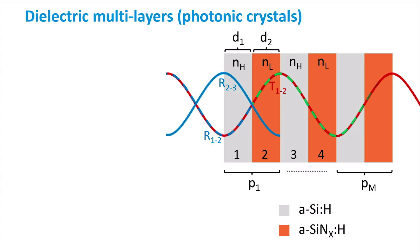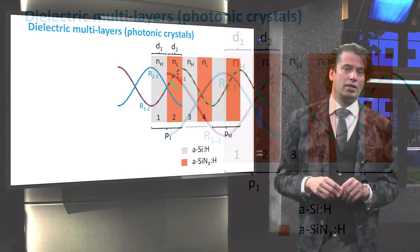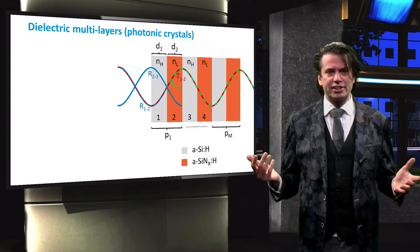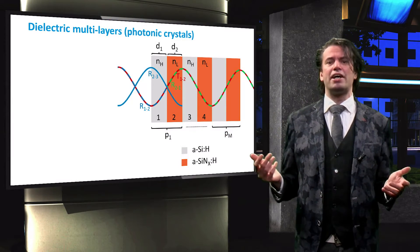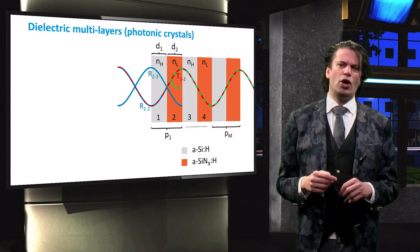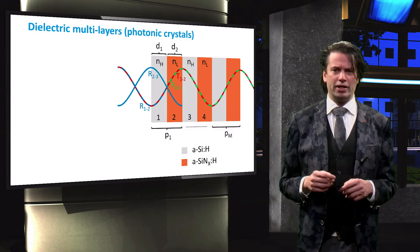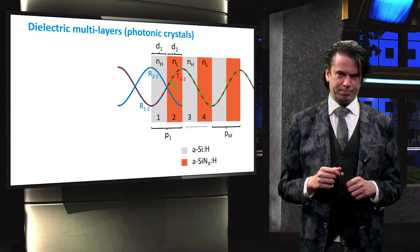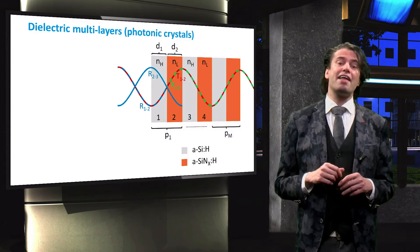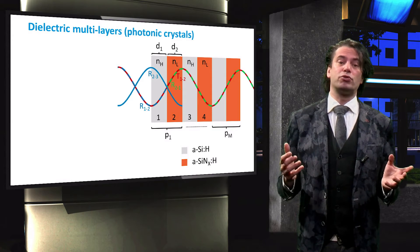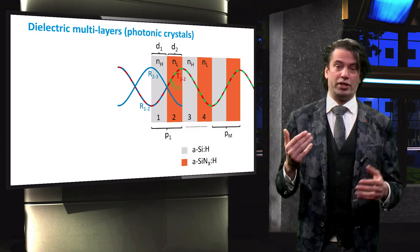A fraction of the wave reflected at the interface will undergo a second reflection at the next interface. This reflection, indicated by the green dashed line, will again experience a 1π phase shift. The reflected and transmitted waves will interfere with each other.